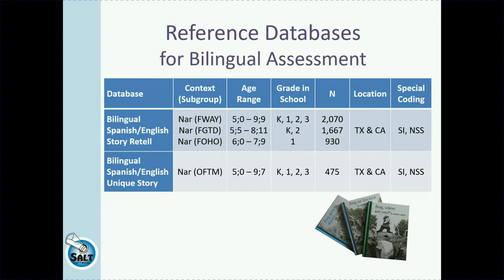For bilingual assessment in Spanish and English, there are a ton of options in SALT software, and this is really a strength of the software — you have an authentic measure for a bilingual speaker. What I really like is that you're comparing bilingual samples to other bilingual samples, so it's not just monolingual Spanish or monolingual English, but children who are bilingual and are acquiring English. That makes me feel a lot more confident as far as a representative normative database. For Spanish-English bilingual retells, there's Frog Where Are You, Frog Goes to Dinner, and Frog on His Own, plus a bilingual unique story option where they generate their own story.